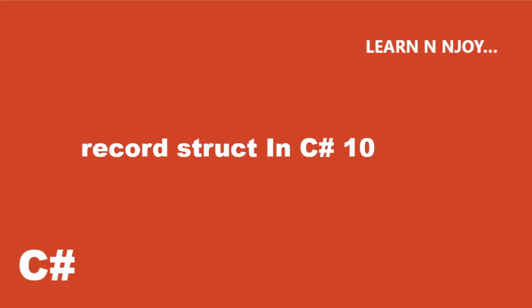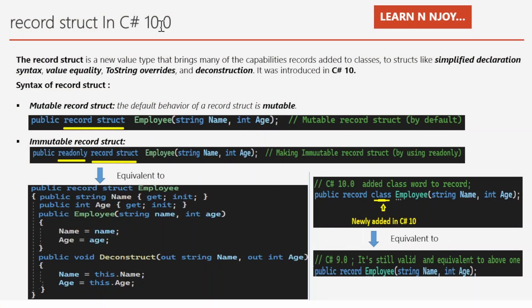The record struct in C# 10.0 — what is record struct? The record struct is a new value type that brings many of the capabilities records added to classes, to structs — like simplified declaration syntax, value equality, ToString overwrites, and deconstruction. This concept was introduced in C# 10.0. If you are not aware about the record type introduced in C# 9.0, I made a separate video for that — you can find the link in the upper right corner and I will mention it in the description as well.